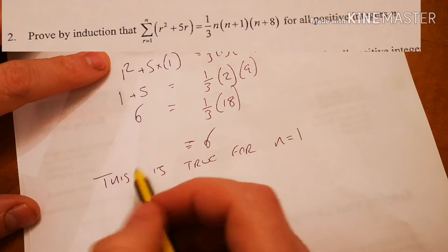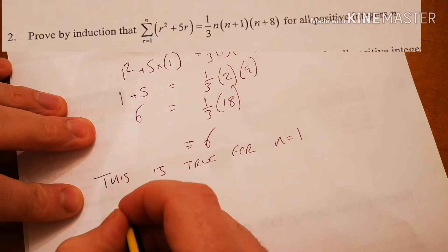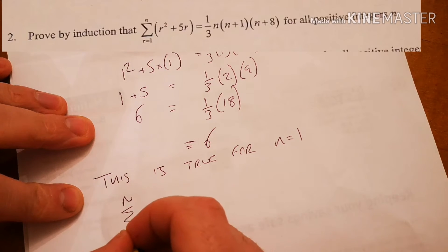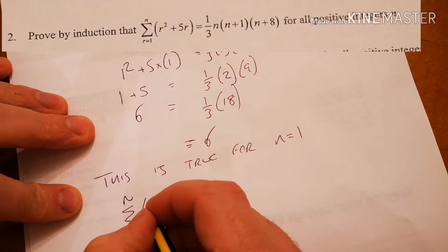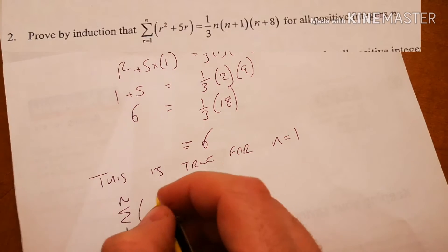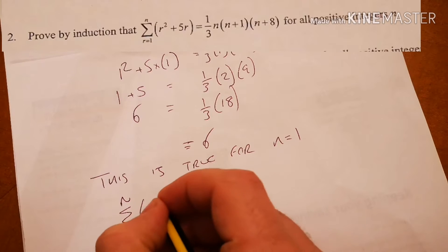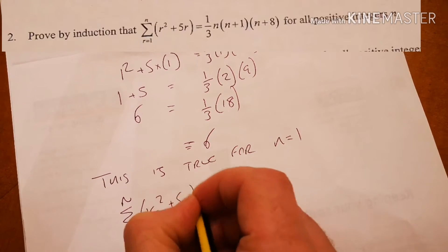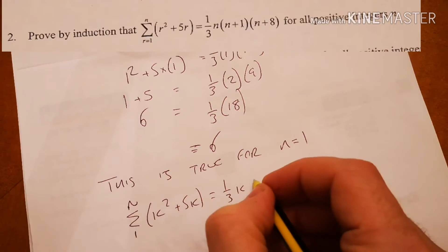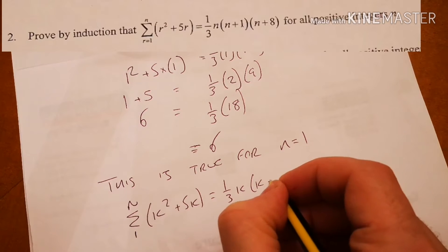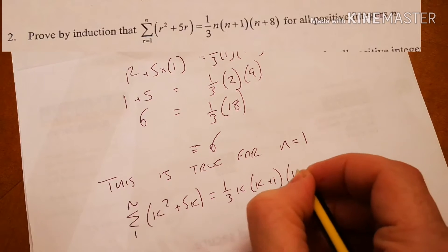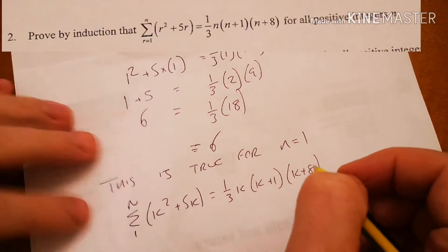Okay, and now we have to prove for, sorry, n equals k. Okay, so I just need to change everything to k's. So k squared plus 5 times k equals a third k, k plus 1, k plus 8.